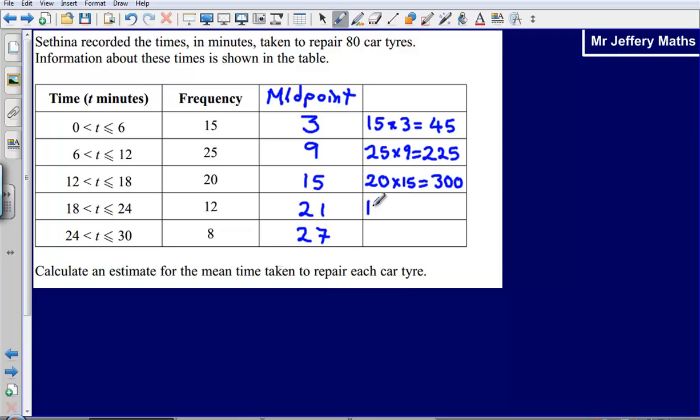12 times 21, that's going to give me a value of 252. And then lastly, 8 times 27, that's going to give me a value of 216.